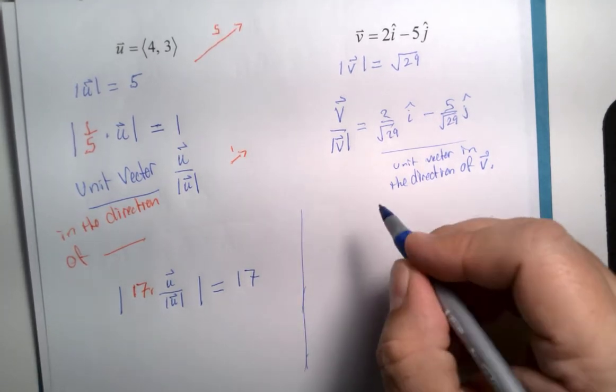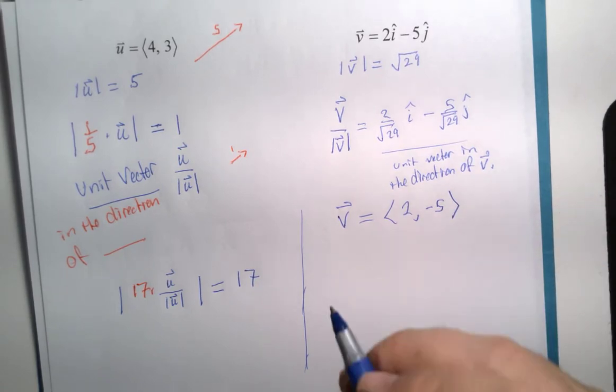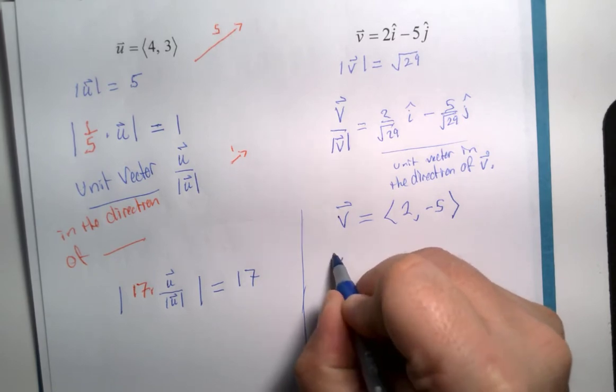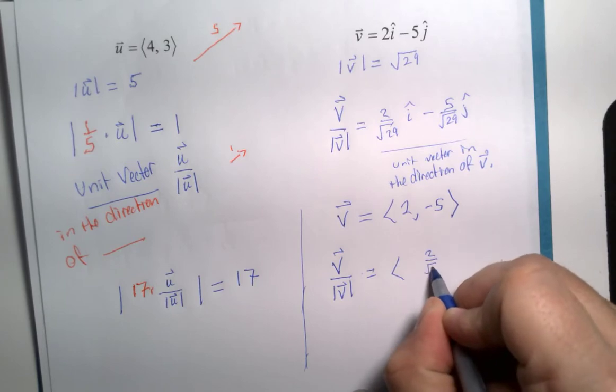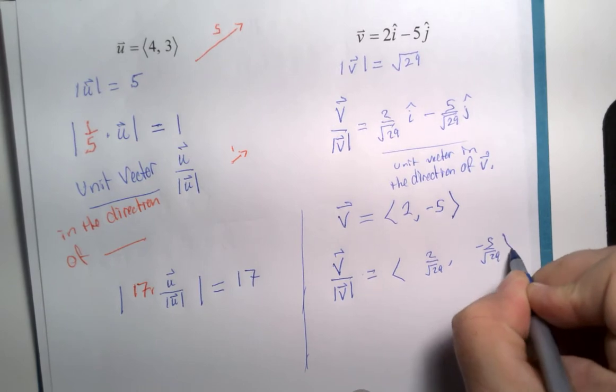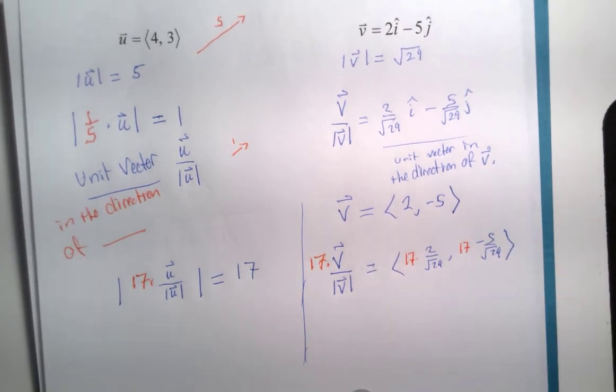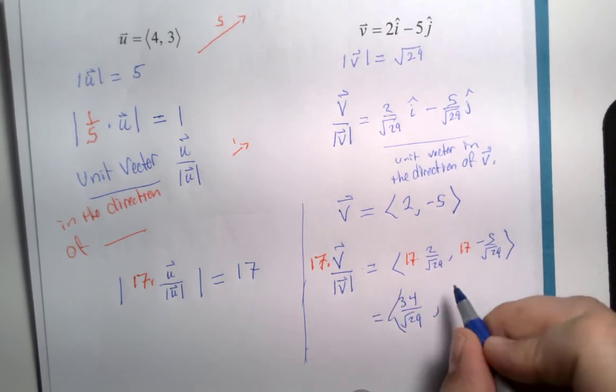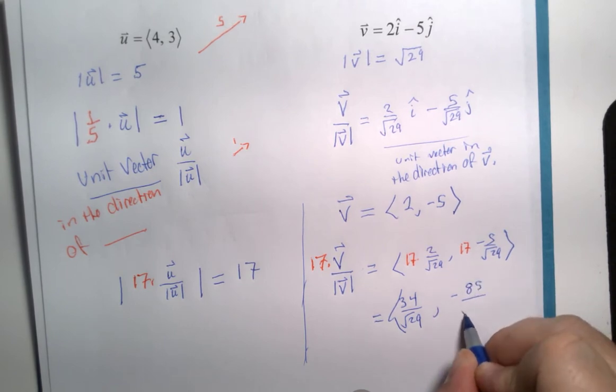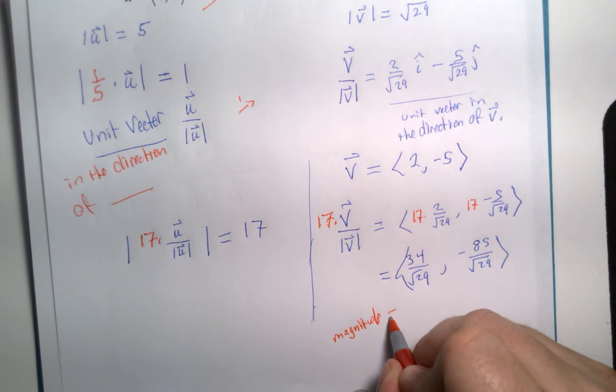So for the example here, for vector v, I'm going to switch notations now to make it a little bit simpler to write quickly. If I were to take vector v and divide it by its magnitude, 2 over square root of 29, negative 5 over square root of 29, but then multiply it by 17 times 17 times 17, this new vector here, 34 over square root of 29, negative 85 over square root of 29, this new vector has a magnitude that is equal to 17 exactly.